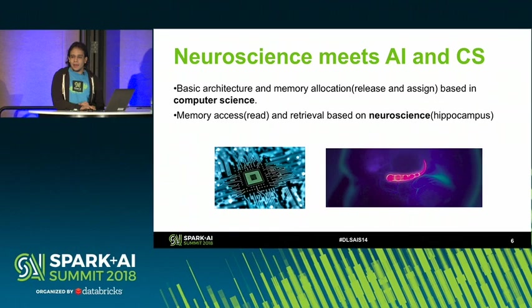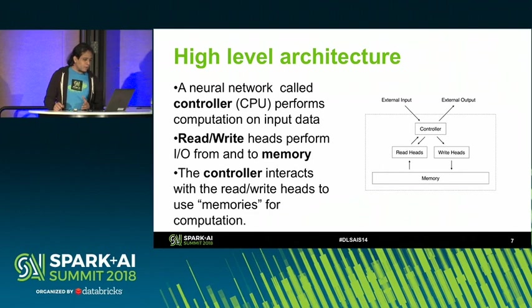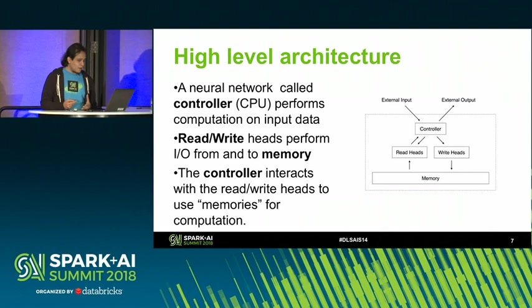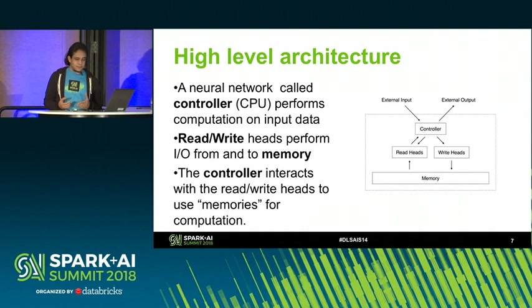What's the high-level architecture of this model? There is a neural network which we call the controller — this is like the CPU of the system. It performs computation on input data. There are also mechanisms called read and write heads which perform I/O from memory. The controller interacts with the read and write heads and uses memories for computation, similar to what we have in our current computing systems.